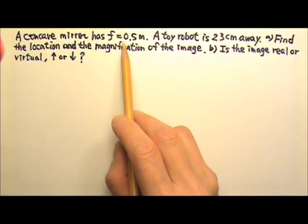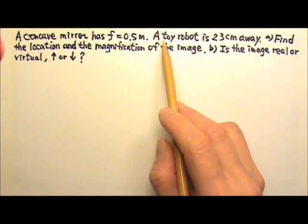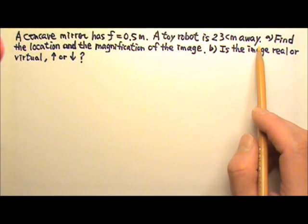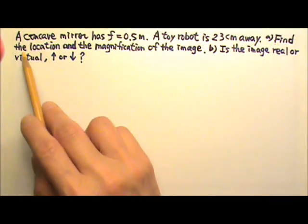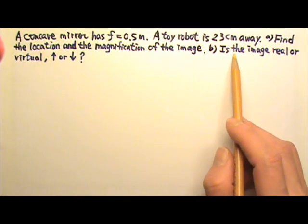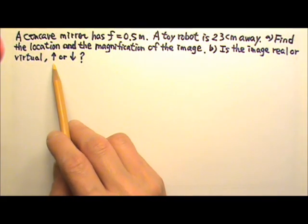A concave mirror has a focal length of 0.5 m. A toy robot is held in front of the mirror 23 cm away. A) Find the location and the magnification of the image of the robot. B) Is the image real or virtual, upright or inverted?